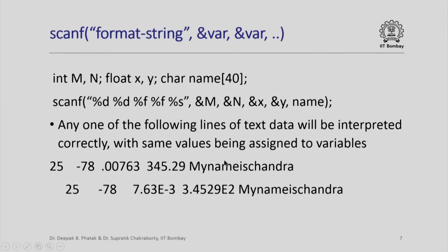Here is an example of scanf. Scanf does the opposite conversion — it uses the format string to interpret values given on input and converts each of these values to corresponding internal format. For example, I have m and n as integer variables, x and y as floating point variables, and a string name as a character array. Notice I have written &m, &n, &x, and &y. The reason is that scanf is trying to get values inserted into these variables, so I must pass these variables by pointer reference; otherwise these variables will not change when they come back from the function.